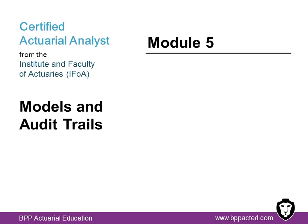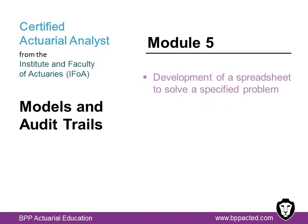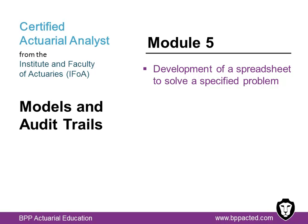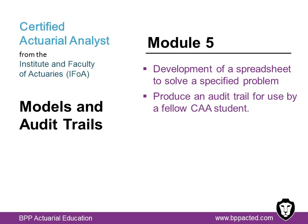Module 5 covers models and audit trails. This module can only be sat once modules 0 to 4 have been passed. It's tested by a three-hour online exam plus 15 minutes of admin time. It's recommended that you spend about 100 hours of study before you'll be ready. The syllabus covers two topic areas: the development of a spreadsheet model to solve a specified problem — you'll summarize data using descriptive statistics and graphical representation, performing checks on the data and results. This will be carried out on Excel, and it is expected that students can use functions such as average, sumif and vlookup. Secondly, you'll produce an audit trail documenting the parameters given in the scenario, the methods used in your model and the checks made, either within the Excel spreadsheet itself or in a separate Word document.